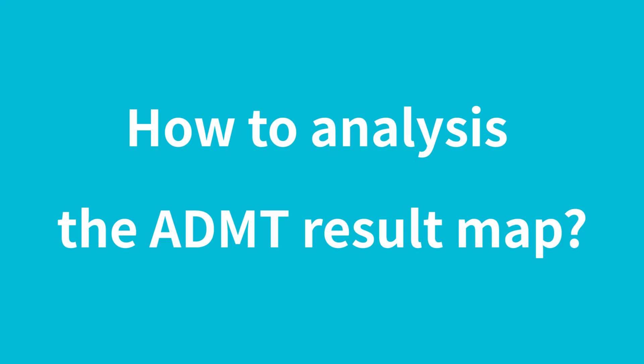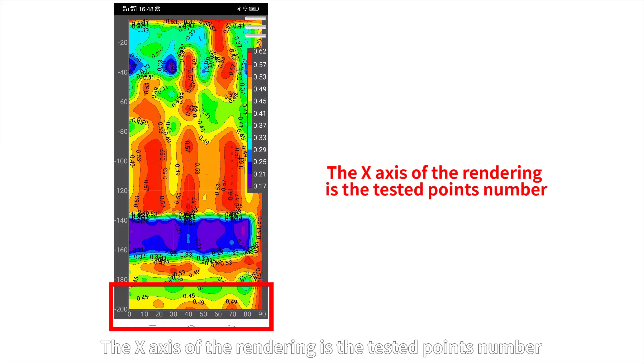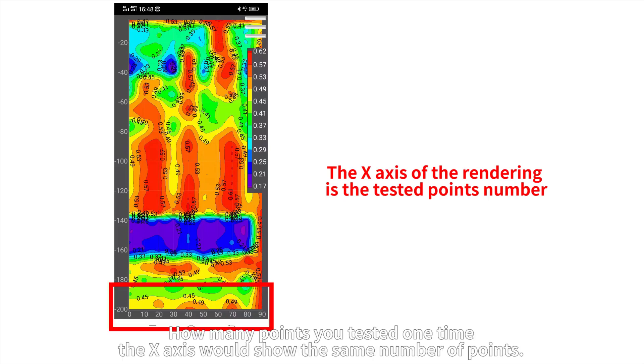How to analyze the ADMT result map. The x-axis of the rendering is the tested points number. How many points you test at one time, the x-axis would show the same number of points.